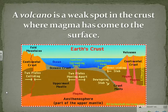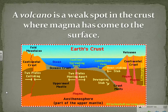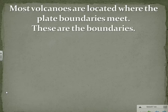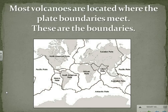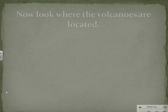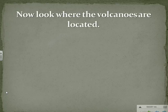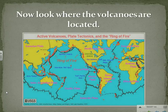Volcanoes. A volcano is a weak spot in the crust where magma has come to the surface. Most volcanoes are located where the plate boundaries meet. These are the boundaries. Now look where the volcanoes are located.